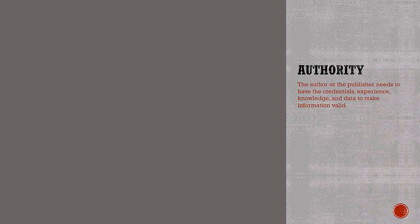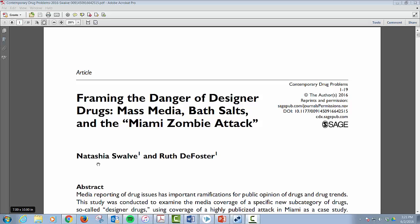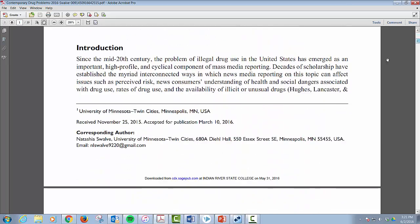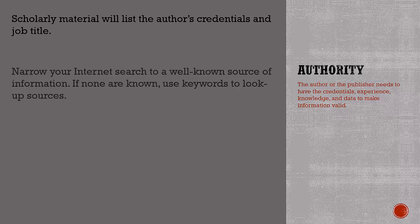Authority refers to the author or publisher of the information. A scholarly source of information will have an easily identifiable author, often with credentials in a job title listed. However, you might want to use information found on the internet. You can limit your results to known publishers by searching for information on a trusted website.